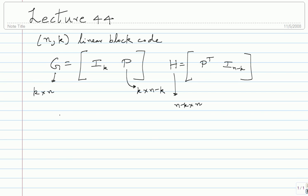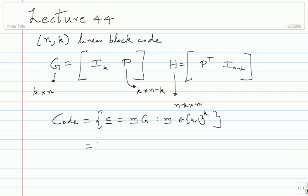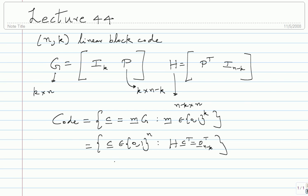So how do you describe it? The code can be described in two ways. Using the generator matrix: the set of all C equals M times G, where M is a K-bit vector. The equivalent way using the parity check matrix is: the set of all C in {0,1}^N such that H times C-transpose equals zero. One description uses basis and generator matrix; the other uses the dual space and parity check matrix. Both are exactly equivalent.